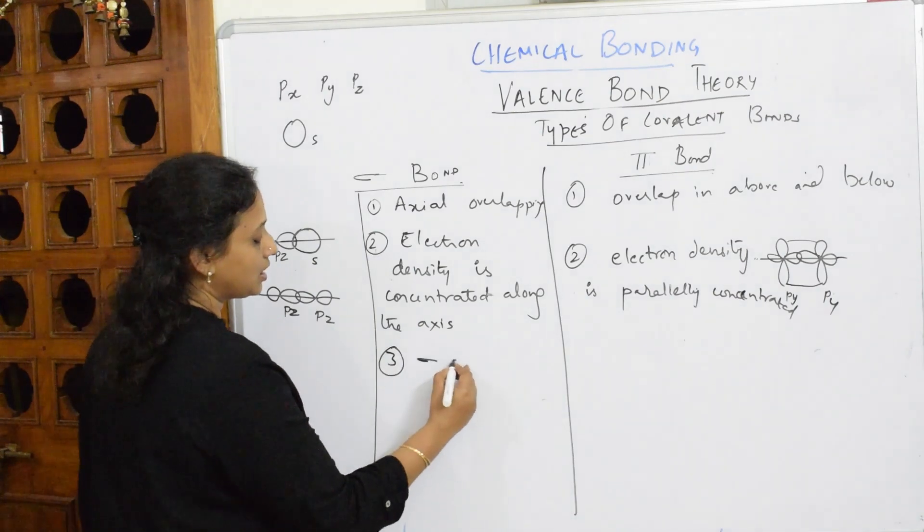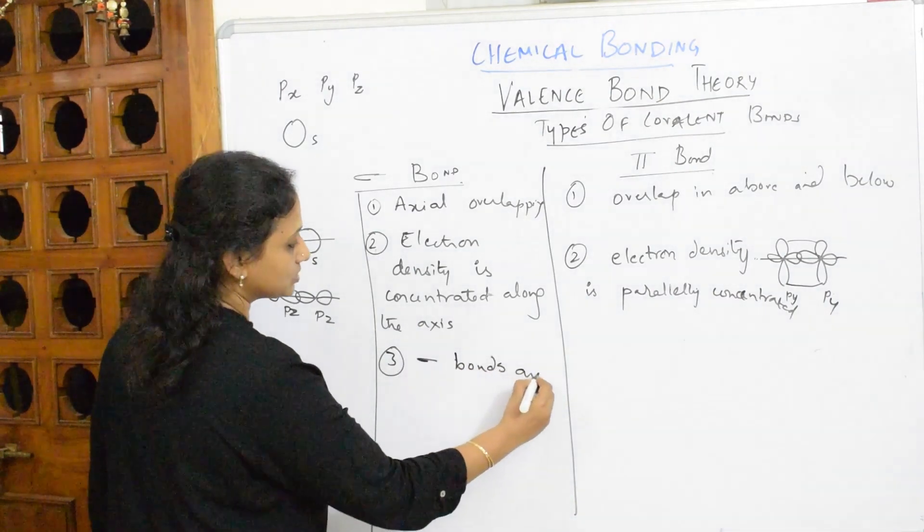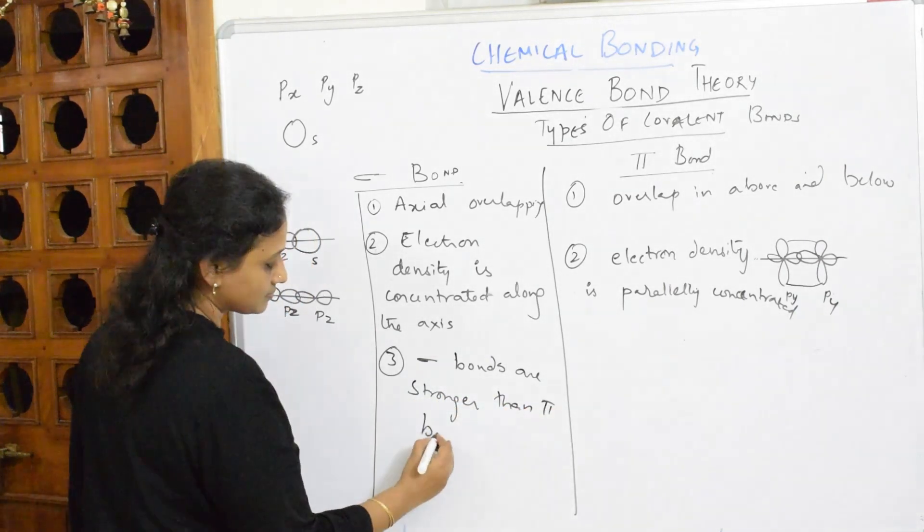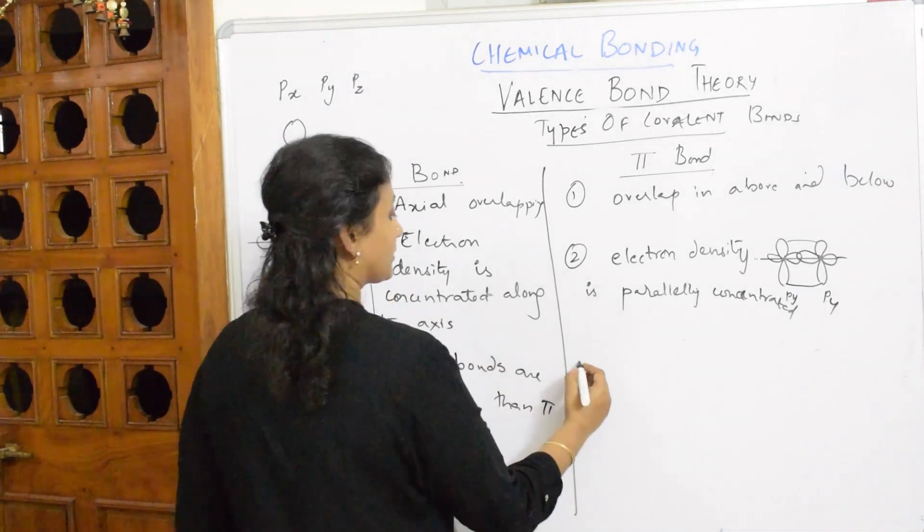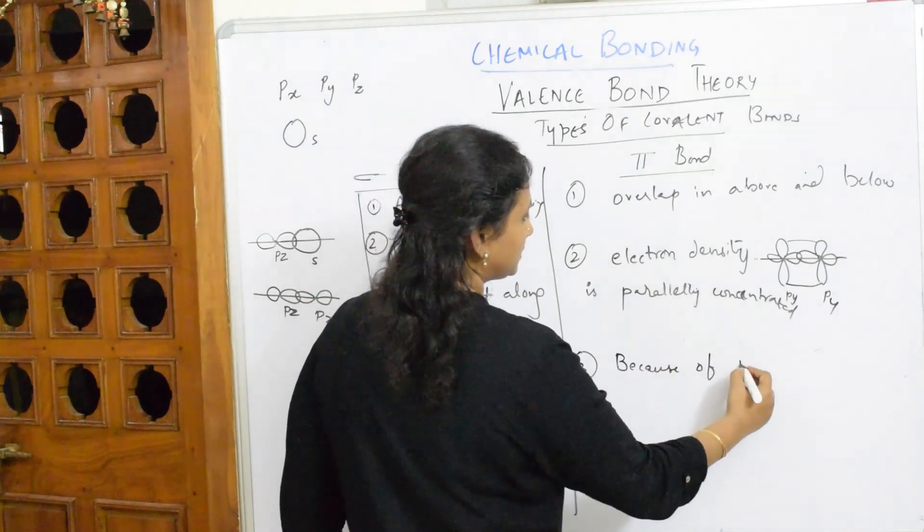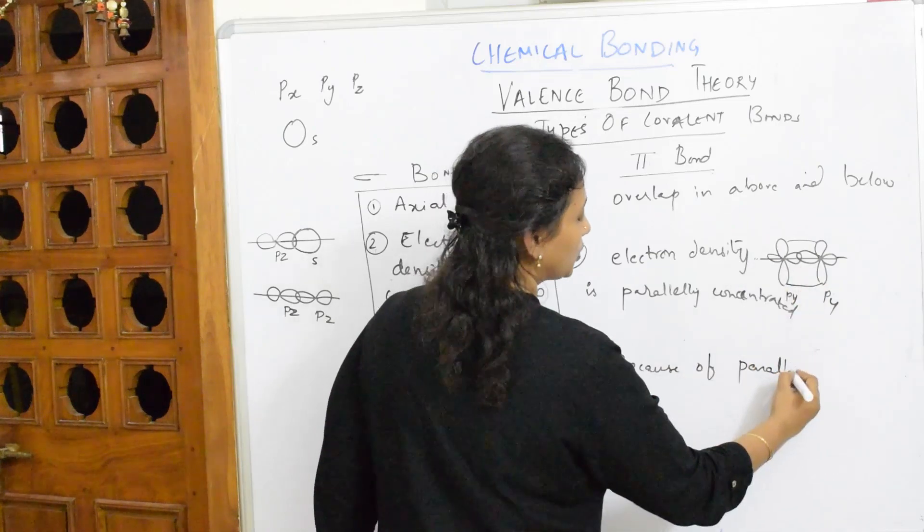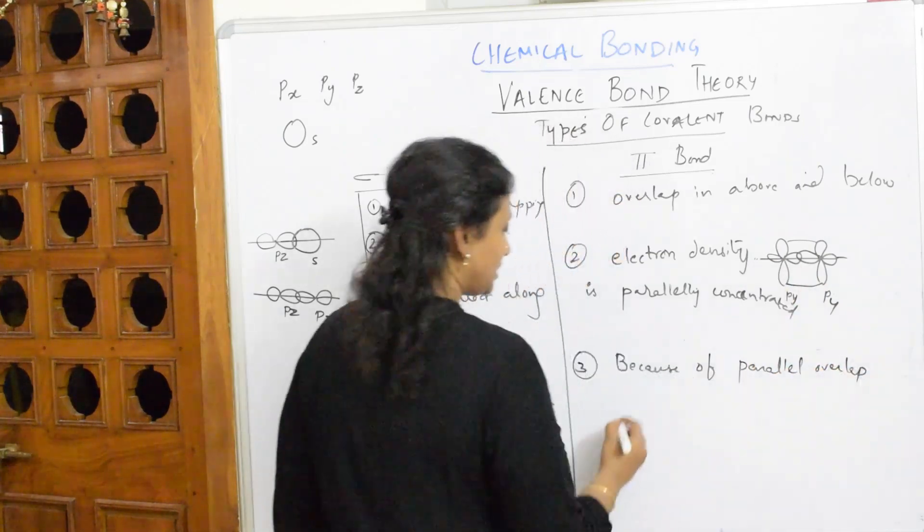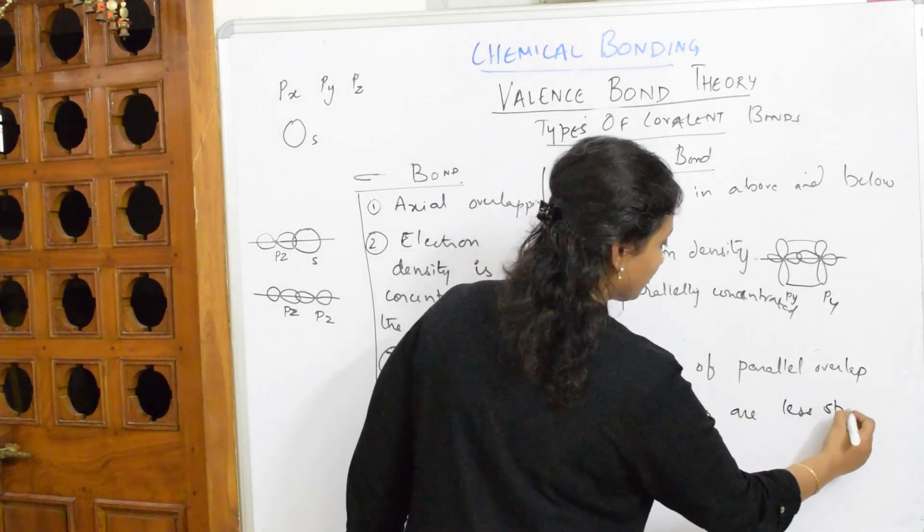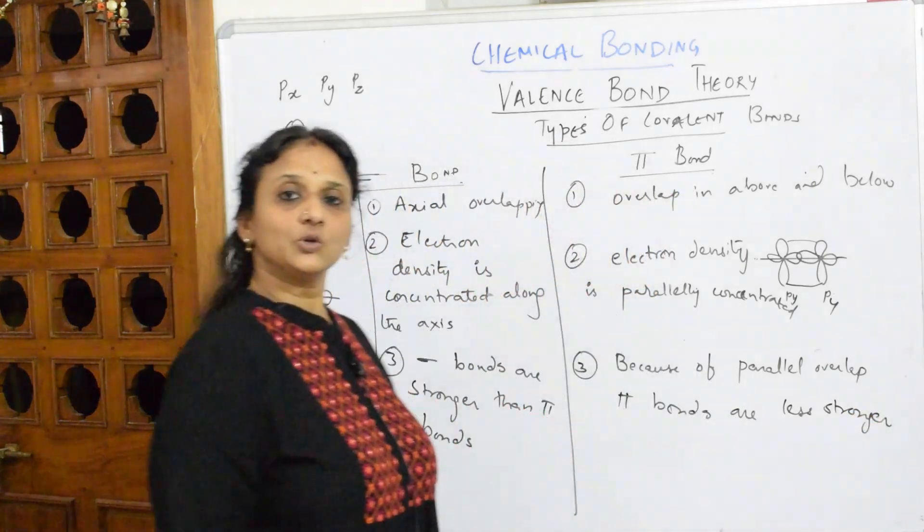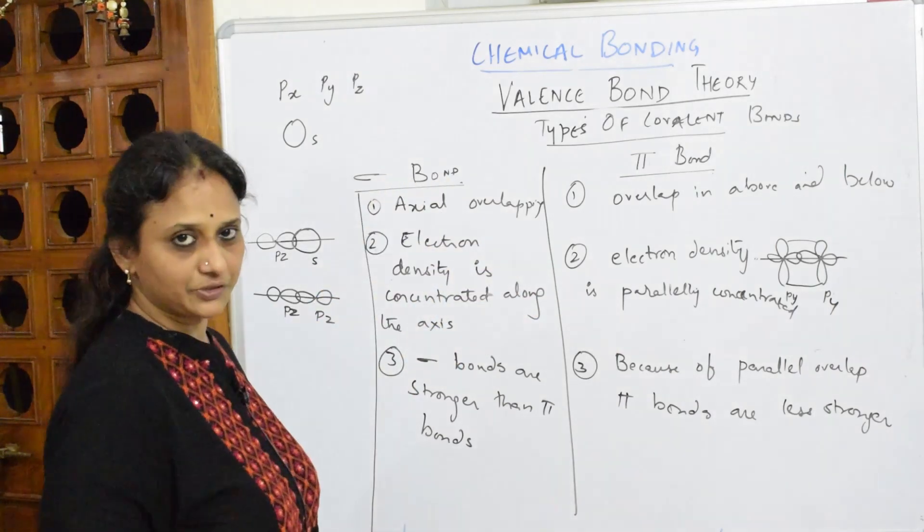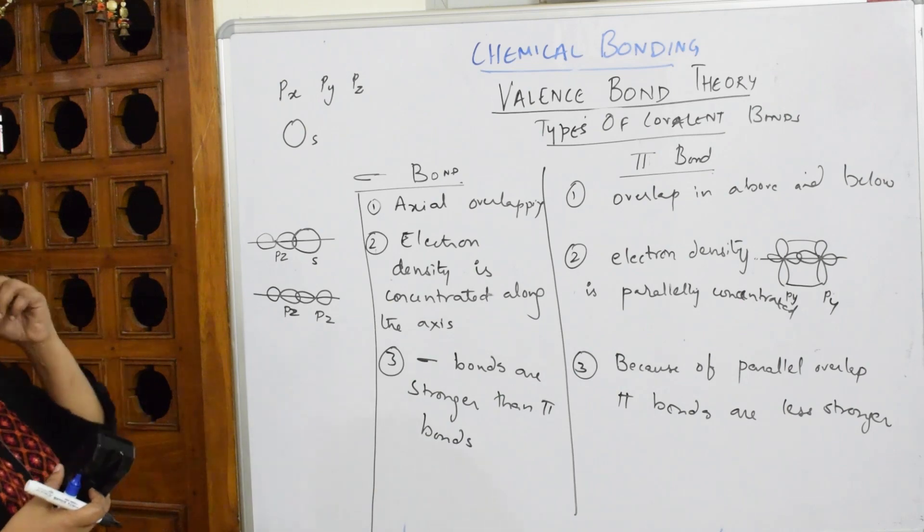Sigma bonds are stronger than pi bonds because electron density is concentrated along the axis. Because of parallel overlap, pi bonds are less stronger. Whenever I say to form pi bond, I have to break the bond in between and then form pi bridges. So pi bonds are less stronger than sigma bond.